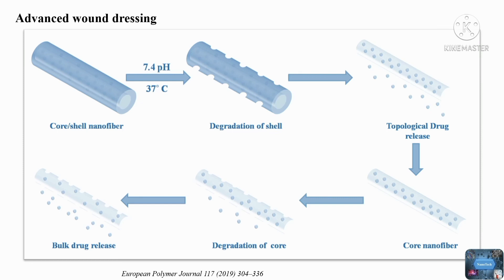Among different electrospun nanofibers, the triaxial electrospun fiber-based scaffold exhibits improved drug release, due to its dual barrier layer, which slows drug diffusion from the scaffold.